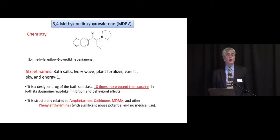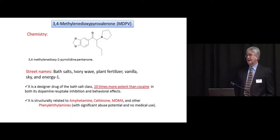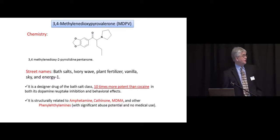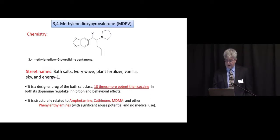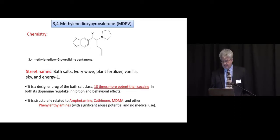One molecule that has come along from the designer cathinone study is MDPV — a substitute for cocaine, a totally synthetic material that is ten times more potent than cocaine.